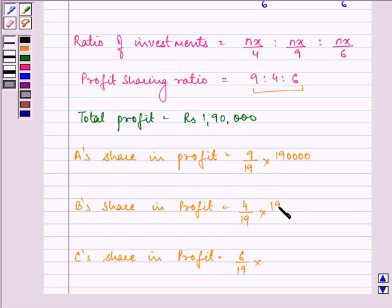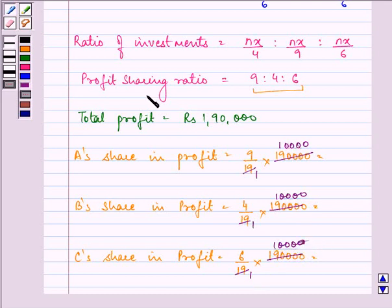A gets 9 by 19 times 1,90,000 which is Rs 90,000. B gets 4 by 19 times 1,90,000 which is Rs 40,000. And C gets 6 by 19 times 1,90,000 which is Rs 60,000 respectively.